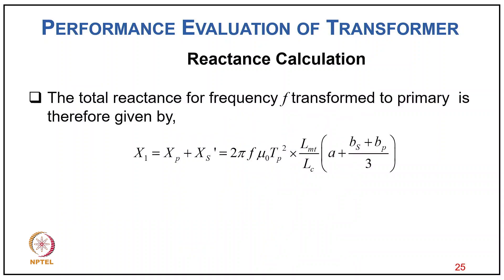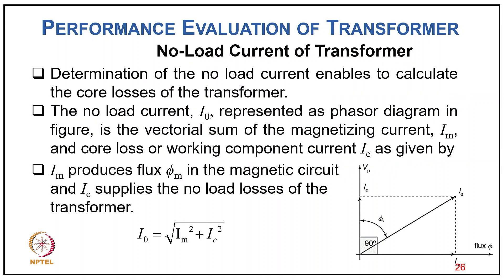The total leakage reactance referred to primary is X1 = 2πf × μ₀ × Tp² × LMT/Lc × [a + (bs + bp)/3], where LMT is the mean turn length of both windings combined.